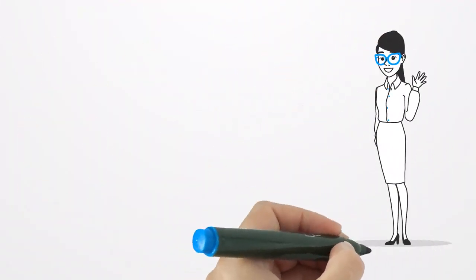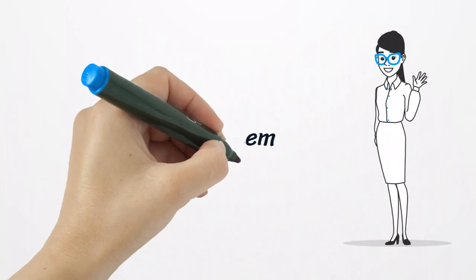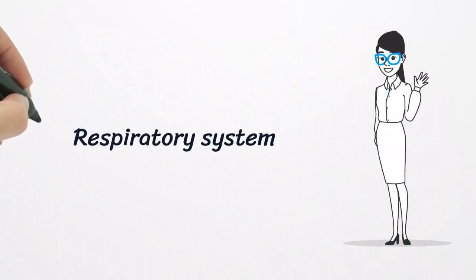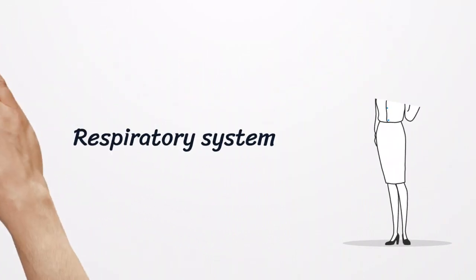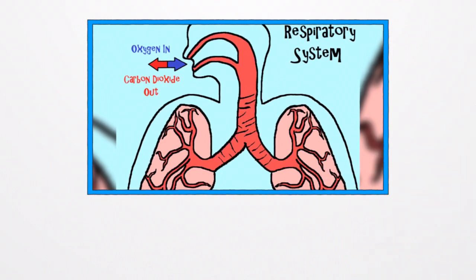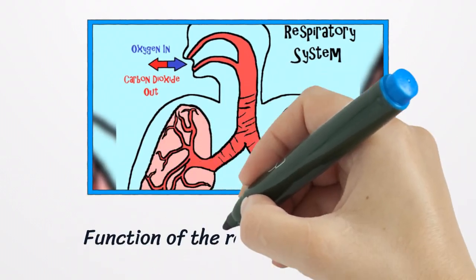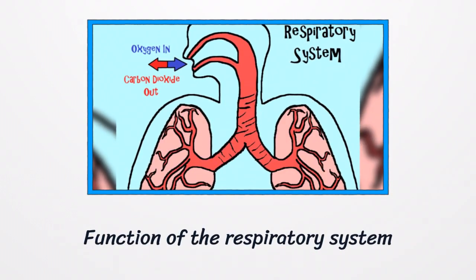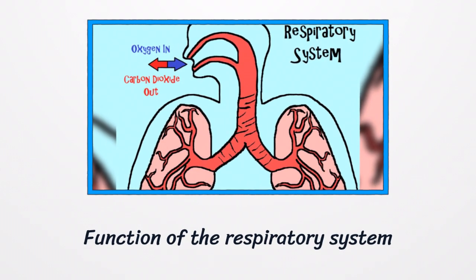Hello everyone, this is Naham and today we're talking about the respiratory system. The function of the respiratory system is to help in taking in the oxygen that your body cells actually require, and to expel the carbon dioxide gas that your body is unable to retain.